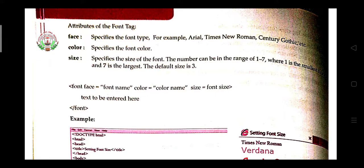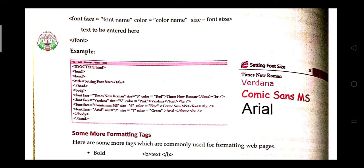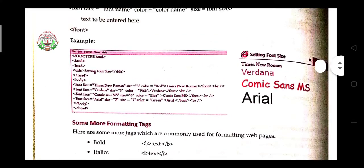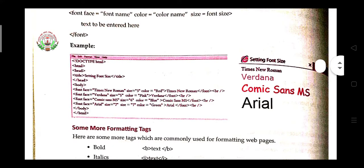Now see how to write the font tag. First, write 'font' in between angular brackets, then the face attribute — face equal to font name, where you write the style of any font. Then the color attribute — color equal to color name, where you write the color name. Then give a size number. In between the font open tag and font close tag, you enter the text to be displayed.